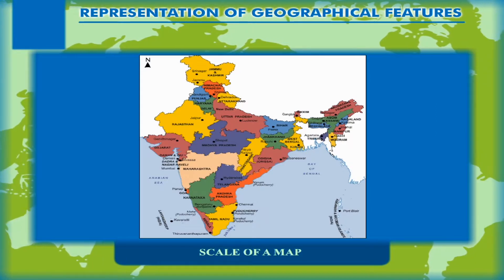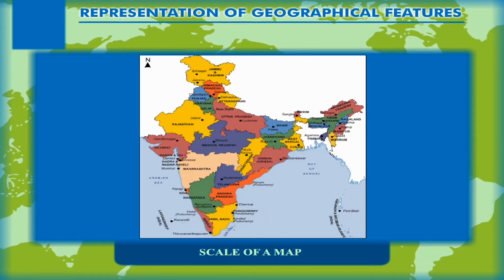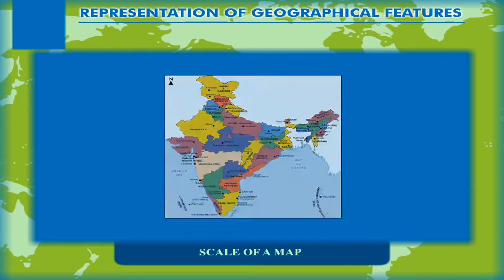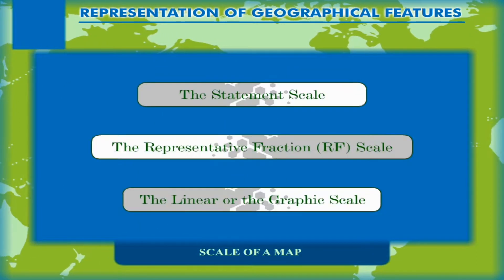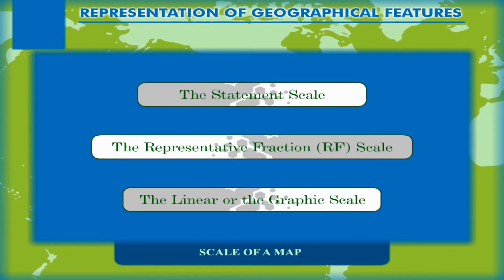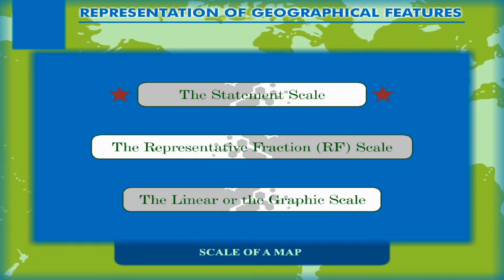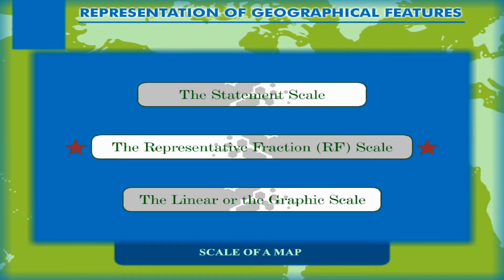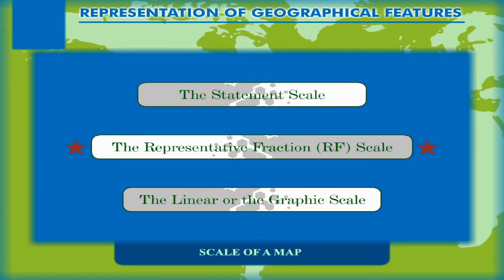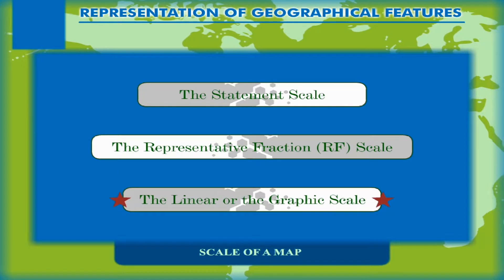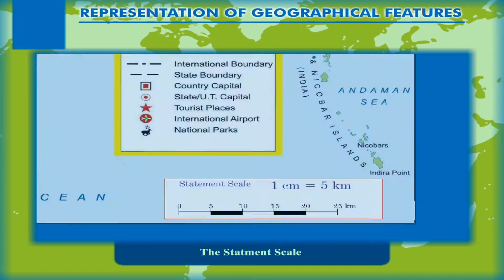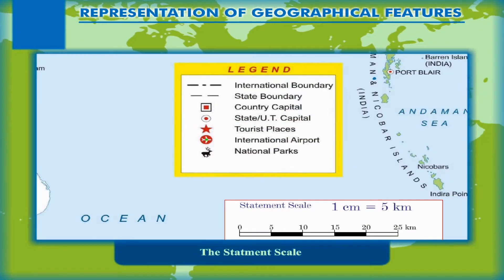Thus, the scale helps us to reduce the size of the earth and represent it as a whole or in part on a piece of paper. The scale used on the map is of three types: the statement scale, the representative fraction scale (RF), and the linear or graphic scale.